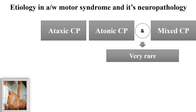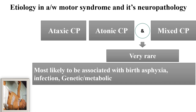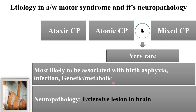Atonic and mixed CP are very rare, associated with birth asphyxia, infections during antenatal or neonatal period, and some genetic and metabolic disorders. In neuropathology, extensive brain damage is present. Mixed CP occurs when a patient has spasticity combined with involuntary movements fitting the athetoid type, and sometimes associated ataxia. Mixed CP is also a very rare and severe form.